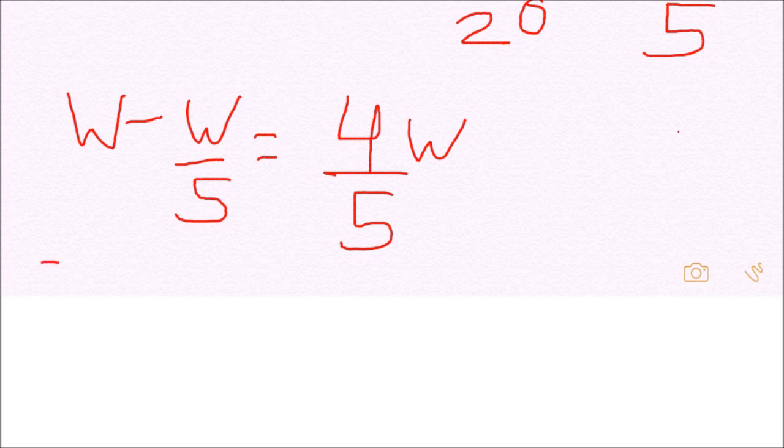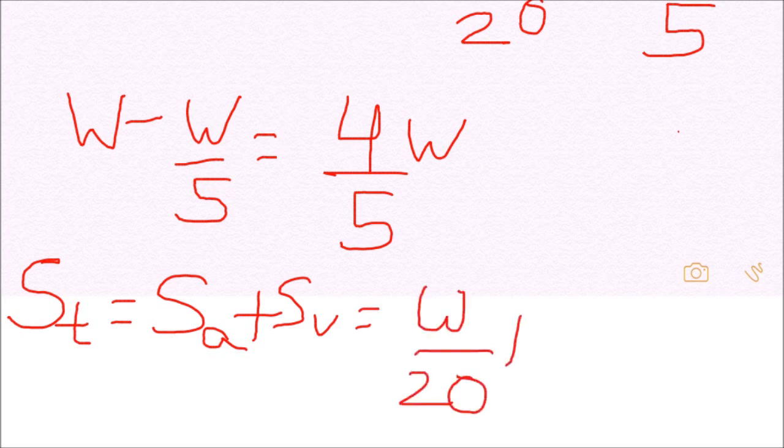Now new speed, the total speed becomes speed of Ajay plus speed of Vijay that is W by 20 plus W by 12 that is 2 by 15 times W.